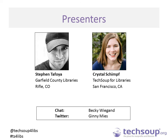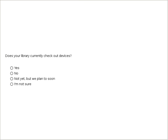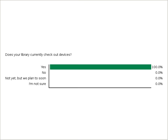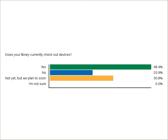We'll be on Twitter using the @TechSoupforLibs handle. We'd like to know a little bit about you too — tell us if your library is currently checking out any technology devices. You can choose your response and click the button to submit. Once you've submitted your response, you'll see a graph showing the results. A fair amount of you are saying not yet, but you do plan to check out devices soon, which means you've come to the right place to start learning.